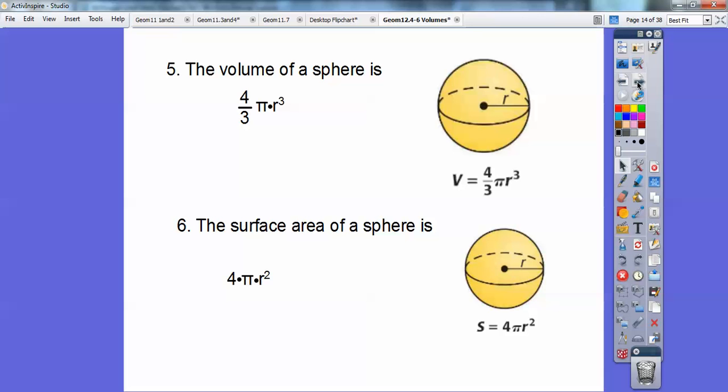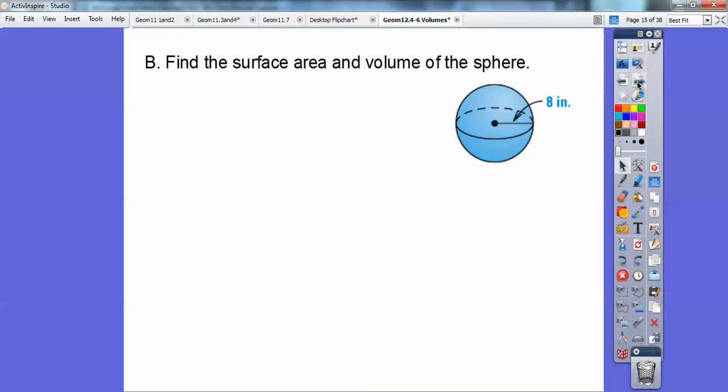Alright, let's try some of these. There's our picture, same picture. Alright, let's try some of these. Find the surface area and the volume of this sphere. Okay, so remember, here's our formula. Surface area is 4πr², and volume is 4πr³. So let's go ahead.